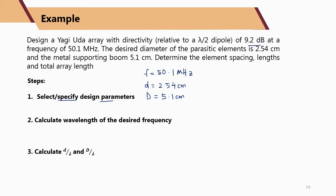Determine the required characteristics: element spacing, length, total array length, and so on. Step 2: calculate the wavelength. Lambda = c/f = 3×10⁸ / 50.1×10⁶ = 5.988 meters.